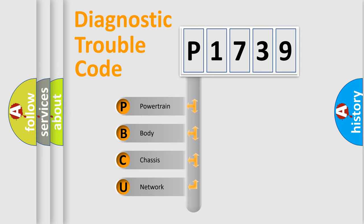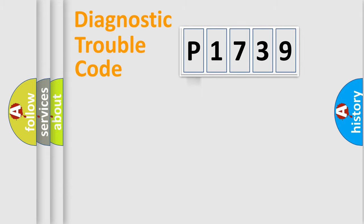We divide the electric system of automobiles into four basic units: powertrain, body, chassis, and network. This distribution is defined in the first character code.